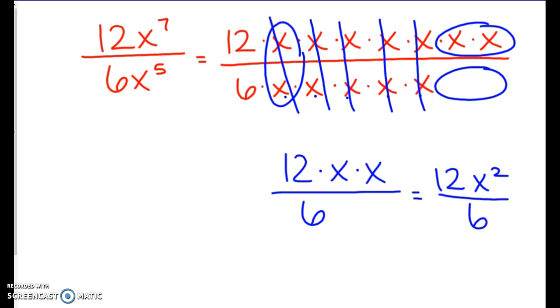And we can reduce 12 and 6 together. We can say 12 divided by 6, that ends up being 2. So we end up with 2x to the second as our final answer. This one up here, that would be an okay answer, but it's not simplified to the best that we can, because 12 divided by 6, we can simplify. Let's do another one of those.